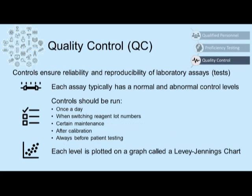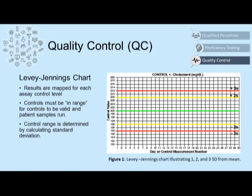Quality control is used to ensure reliable and reproducible laboratory assays or tests. Each assay tested in a clinical laboratory typically has a normal and an abnormal control value. The controls should be run once a day when switching reagent lot numbers, during routine or certain types of maintenance, after calibration, and quality control should always be run before and pass before patient testing begins. Each level of quality control is plotted on a graph called the Levy-Jennings chart, mapped out with each different control value for each assay for every day the control is run. The controls must be in range and valid for a patient sample to be run that day.